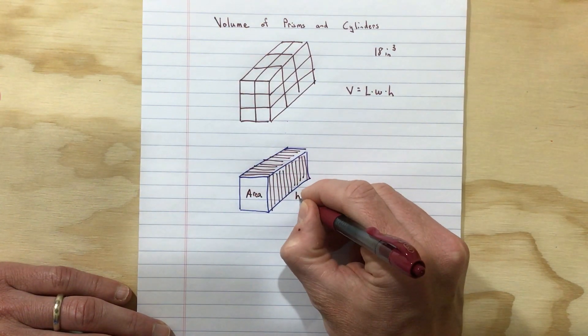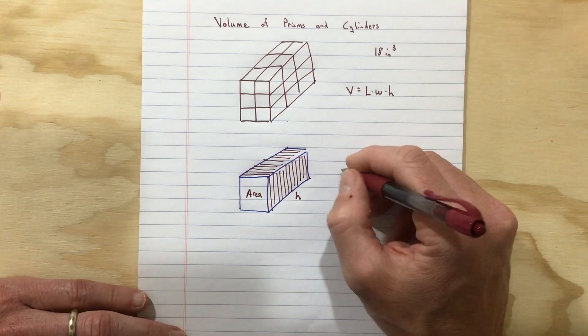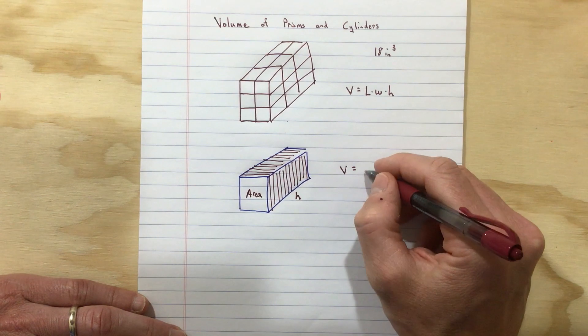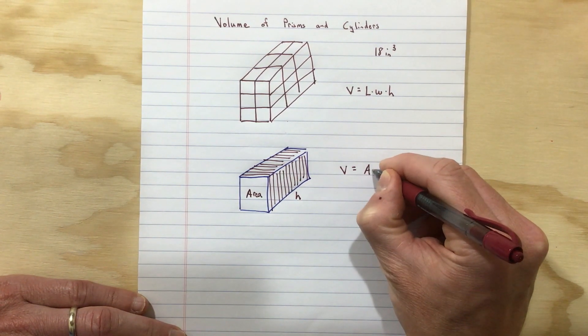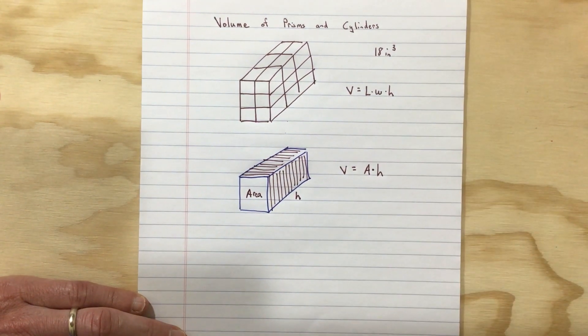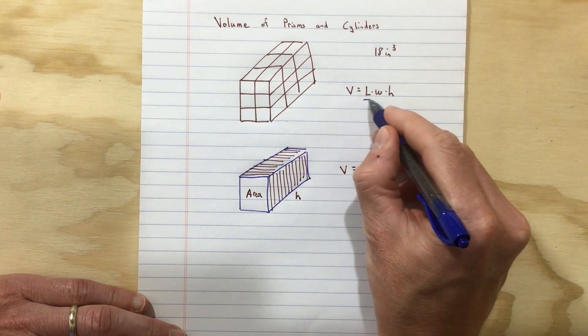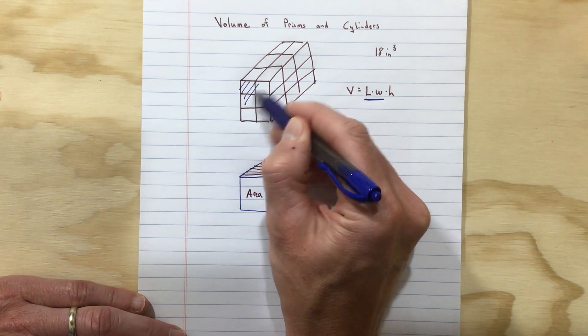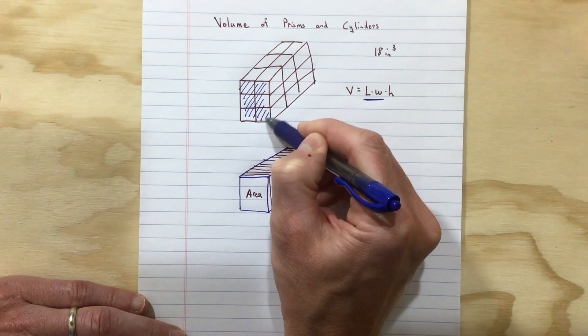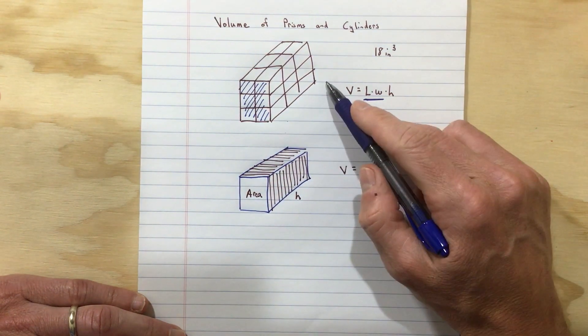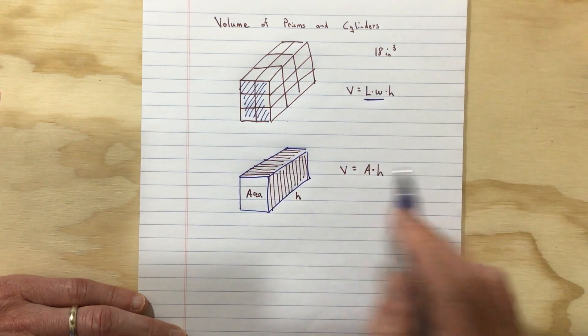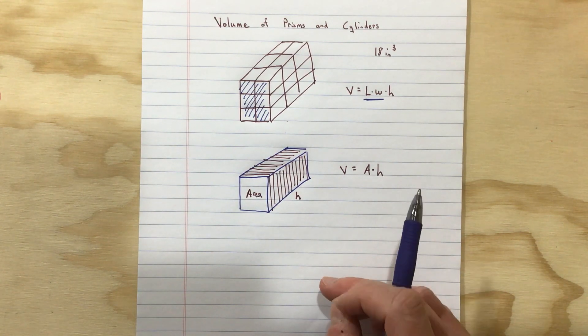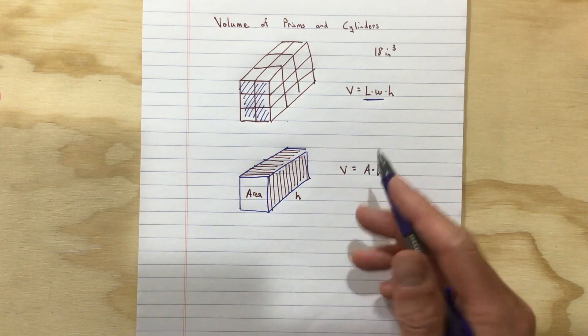Maybe the height or the depth - some people call it the depth if it goes this way, the height if it goes this way. We'll call it the height here. So then really, the volume of any prism or cylinder is the area of that base times the height. In the traditional formula, clearly the length times the width gives us the area of this front face. We take the area of that front face, which is 6 (2 times 3), and then multiply by 3, and we get the same thing. This is just the more generalized version of how to find the area of a prism or a cylinder.